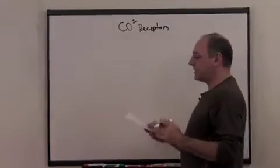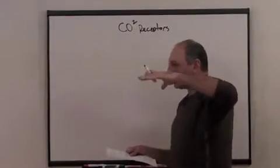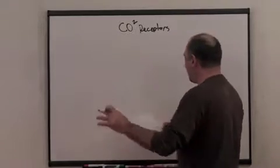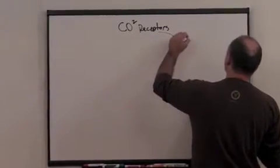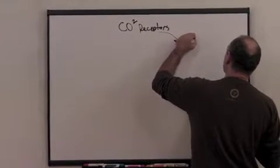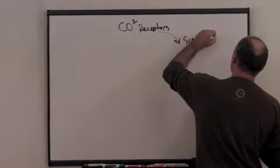So the CO2 receptors in the system are constantly monitoring the level of carbon dioxide in your blood. When it reaches a certain threshold, it triggers a signal to the phrenic nerve.